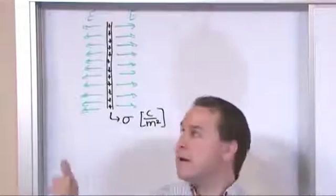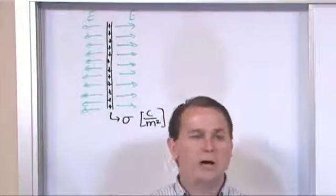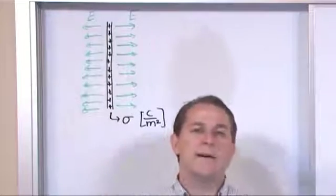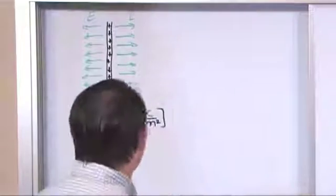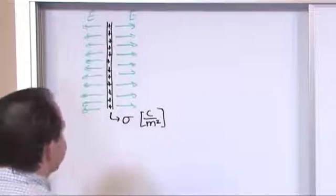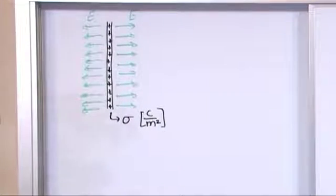But it actually turns out, and I'll show you why in a second, that the best Gaussian surface to use for these kinds of problems is actually still a cylinder, but oriented differently.